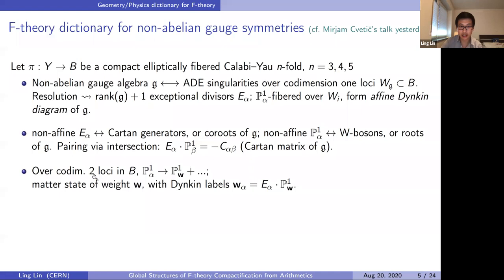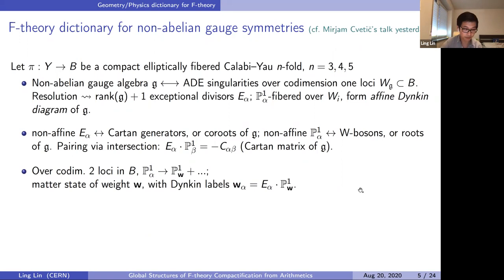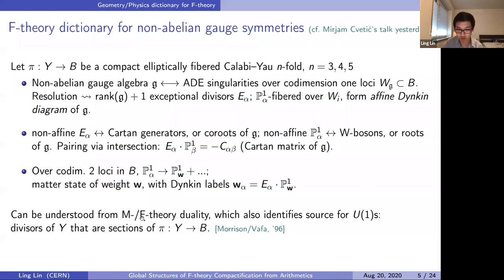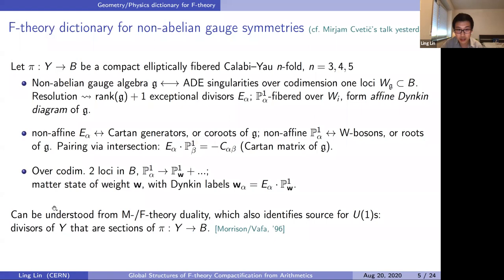Matter states are associated to rational curves appearing only in higher codimension in the base. Their Cartan charges — the Dynkin labels determining the weight of a matter state — are given by the intersection number with the exceptional divisors. This whole story can be understood from the M-duality between M-theory and F-theory, where M-theory compactification on the elliptic Calabi-Yau is interpreted as a circle reduction of F-theory compactification. Through this duality, one can also identify sources for genuine U(1) gauge symmetry — U(1)s not part of the Cartan subalgebra — associated to divisors that are sections of the elliptic fibration.